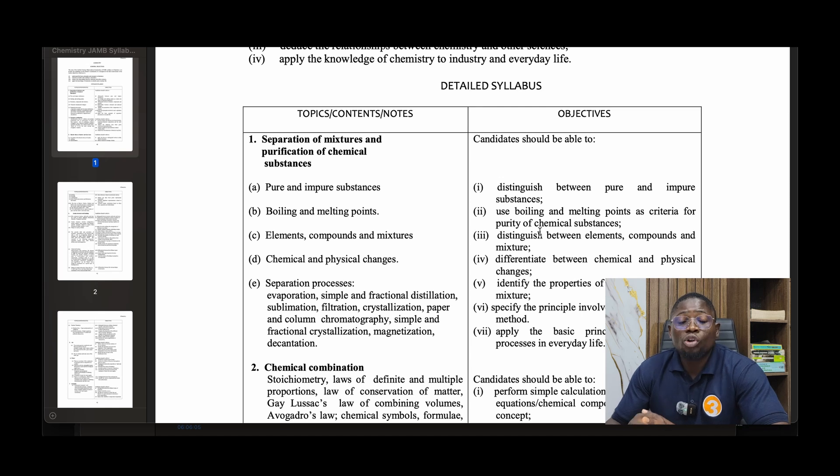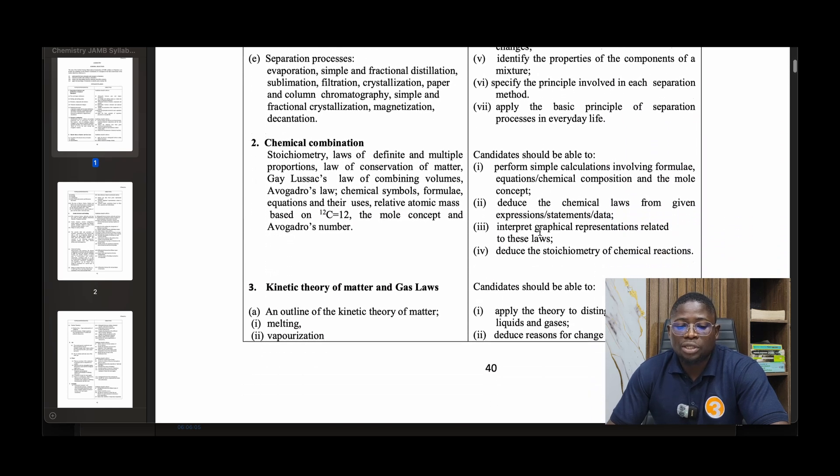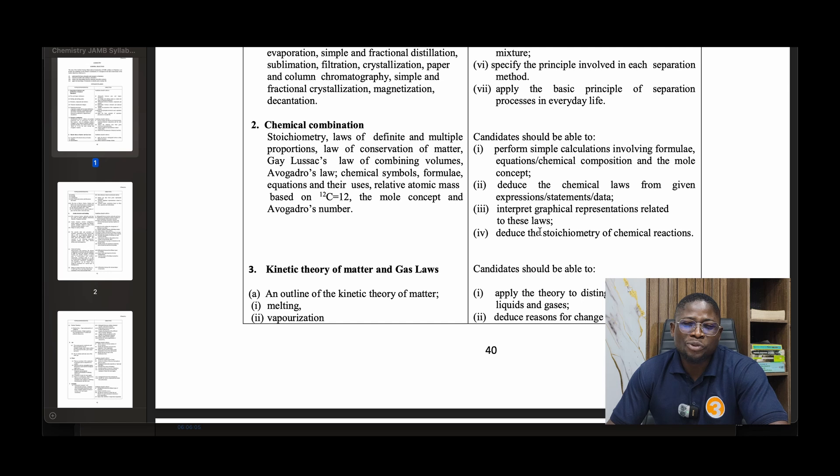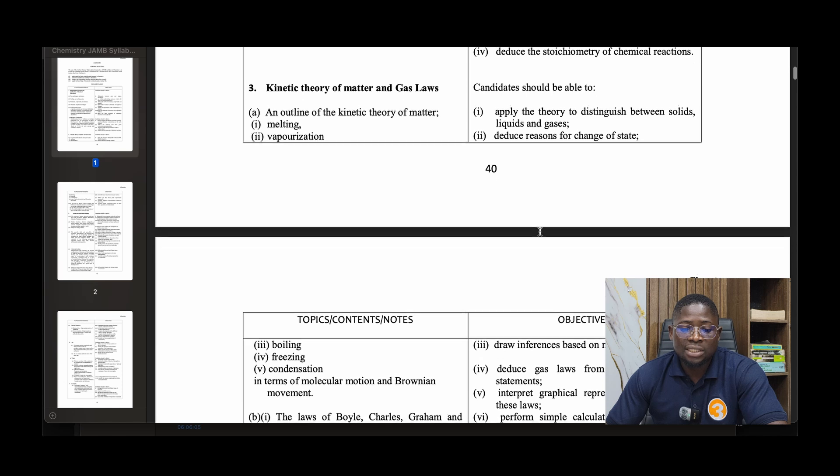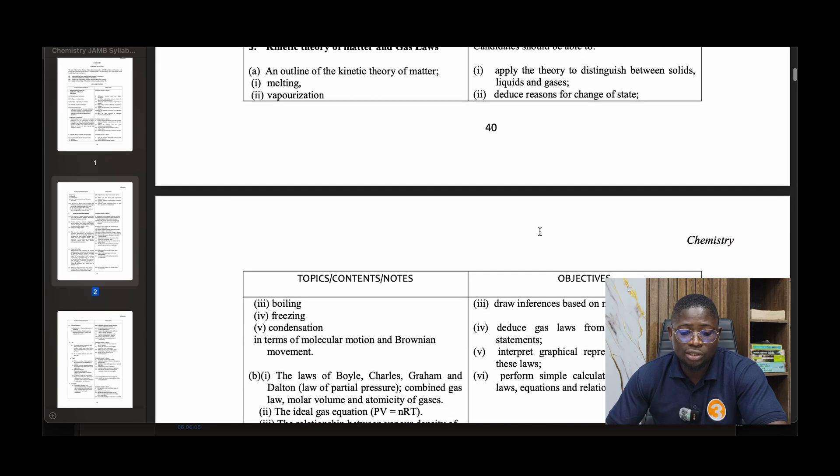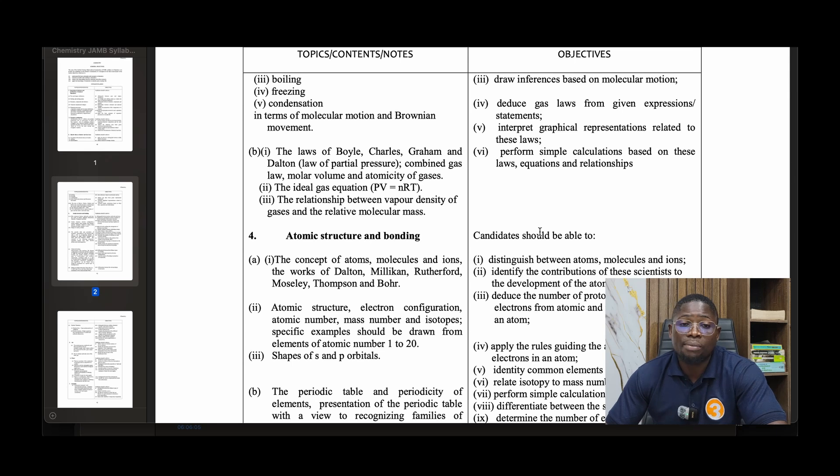Number two is chemical combination. We'll talk about stoichiometry - a very interesting topic I've done a full class on. Law of definite and multiple proportions, law of conservation of matter, Gay-Lussac's law of combining volumes, Avogadro's law, chemical symbols, formulas, equations and their uses, relative atomic mass based on carbon-12, the mole concept and Avogadro's number. Number three: Kinetic theory of matter and gas laws, including an outline of kinetic theory, melting, vaporization, boiling, freezing, condensation in terms of molecular motion, and Brownian movements.